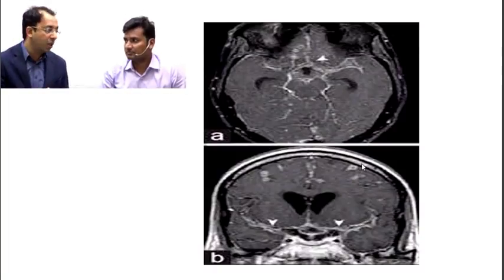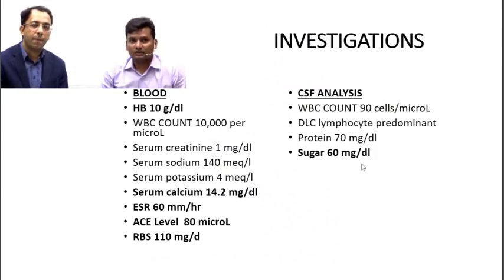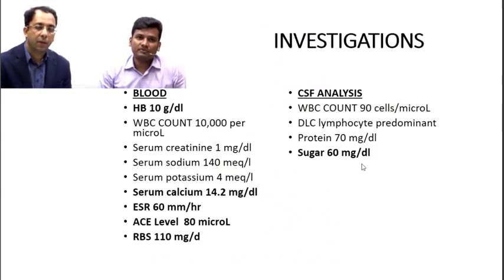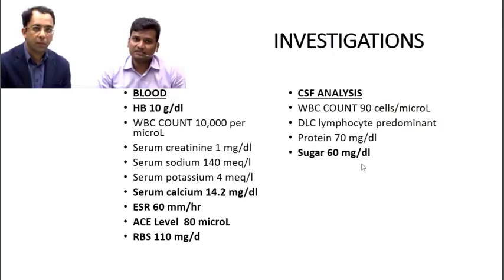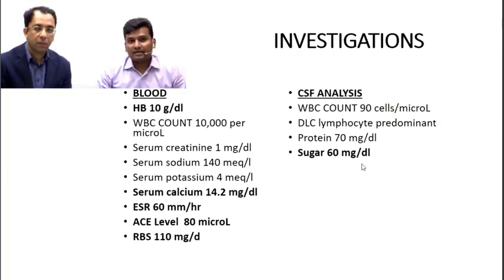Blood investigations showed hemoglobin of 10 (anemia), normal WBC count, normal creatinine and electrolytes, but calcium of 14.2 (elevated), ESR elevated at 60, angiotensin-converting enzyme (ACE) level elevated at 80 micrograms/L, and random blood sugar of 110 mg/dL.